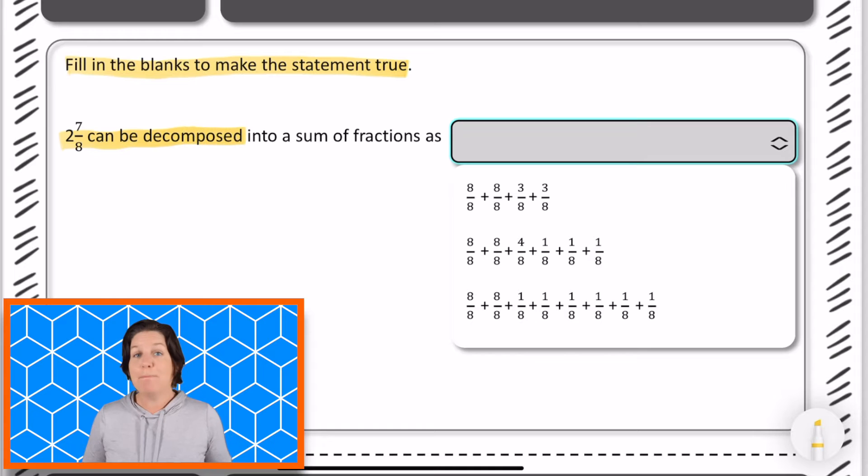Can be decomposed. Decomposed means broken down, decomposed into a sum of fractions. Sum means that we're adding fractions, finding the sum we're adding. So two and seven eighths can be broken down, decomposed into which one of these fractions.